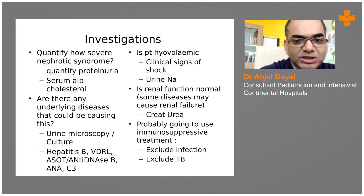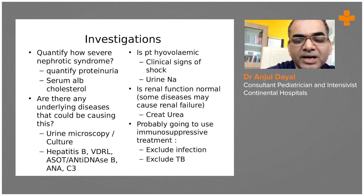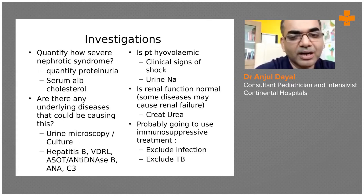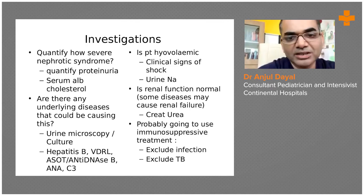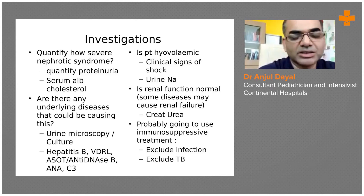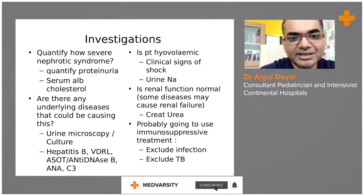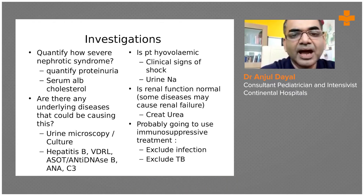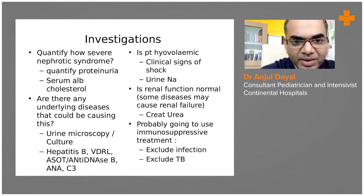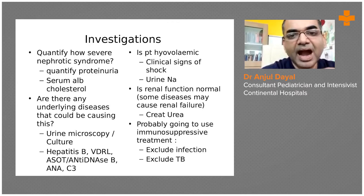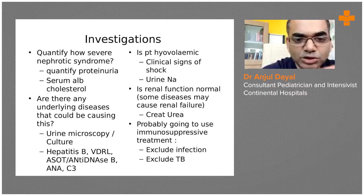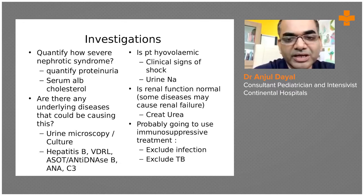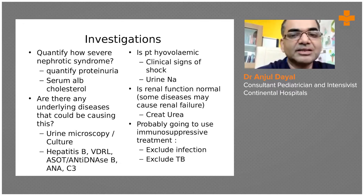First and foremost is to diagnose the nephrotic syndrome. We do the urine for proteinuria — either initially we do the early morning dipstick test, spot protein-creatinine ratio, or 24-hour proteinuria to quantify the amount of protein the child is excreting. This helps in defining the severity of proteinuria. We also look at serum albumin, which tells us about hypoalbuminemia, and cholesterol. Usually cholesterol is high, albumin is low, and there is massive proteinuria. This defines nephrotic syndrome.